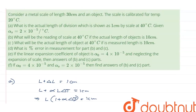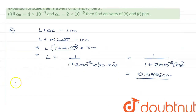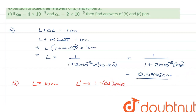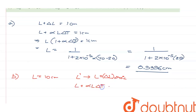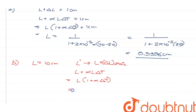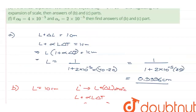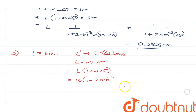Now the B part of the question asks: what will be the reading of the scale at 40 degrees Celsius if the actual length of the object is 10 centimeters? So L is equal to 10 centimeters, and we have to find L dash. L dash is L plus delta L at 40 degrees Celsius. Using the formula: L into 1 plus alpha delta T equals 10 into 1 plus 2 into 10 raised to the power minus 5 into 20, which gives us 10.004 centimeters.